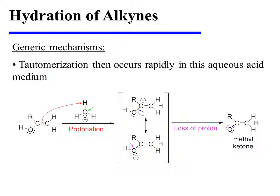This oxonium ion loses a proton, and finally the mercury is exchanged for a proton to afford the Markovnikov enol. Tautomerization of the Markovnikov enol then occurs rapidly in this aqueous acid medium. The remaining pi bond is protonated so as to form the only carbocation that can be resonance stabilized. The more stable resonance form contains an oxonium ion, and the loss of a proton from that oxonium ion generates the methyl ketone reaction product.